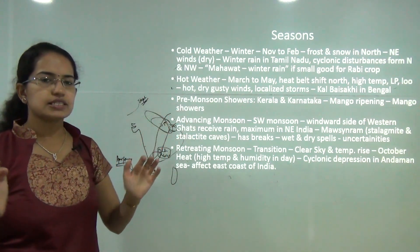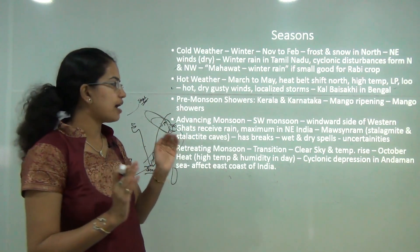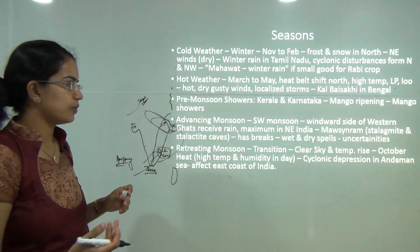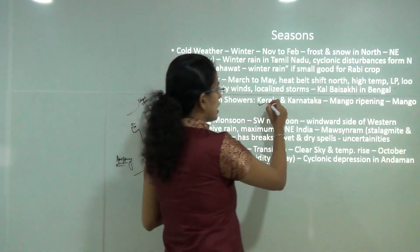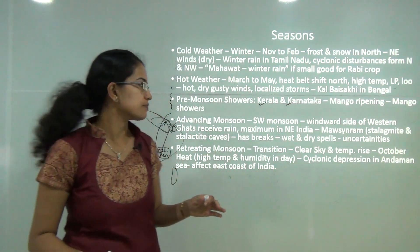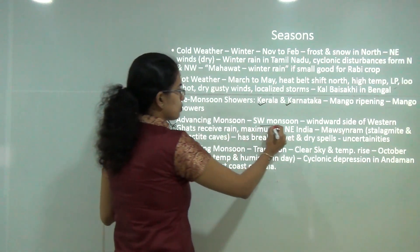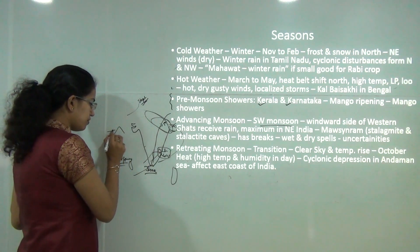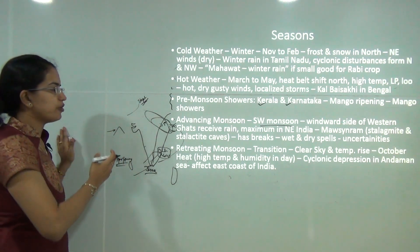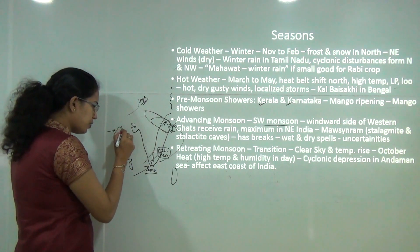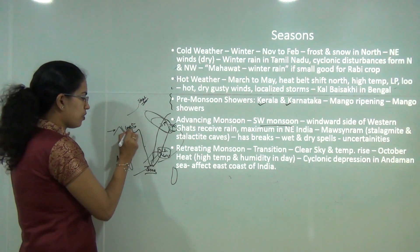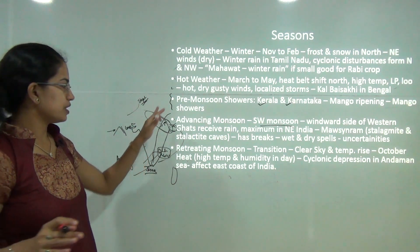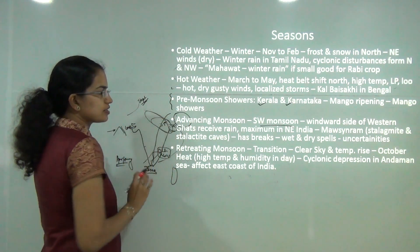Between the hot weather and monsoon seasons, there are pre-monsoon showers good for ripening mangoes. In Kerala and Karnataka they are known as mango showers. Then comes the advancing monsoon, which is the southwest monsoon. The windward western side receives most of the rainfall, while the leeward side of the Western Ghats receives less. The advancing monsoon has maximum impact in northeast India.